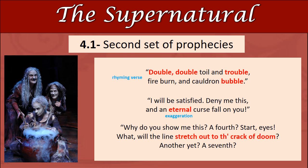The witches show him a line of kings about to take over from him, and Macbeth's reaction is: "Why do you show me this? A fourth — start, eyes! What, will the line stretch out to the crack of doom? Another yet? A seventh?" He's seeing Banquo's issue — the line of seven kings. The technique used here, again, is exaggeration — "stretch out into the crack of doom" — so it uses hyperbole, which is very over the top. And of course there are loads of rhetorical questions to show his disbelief.